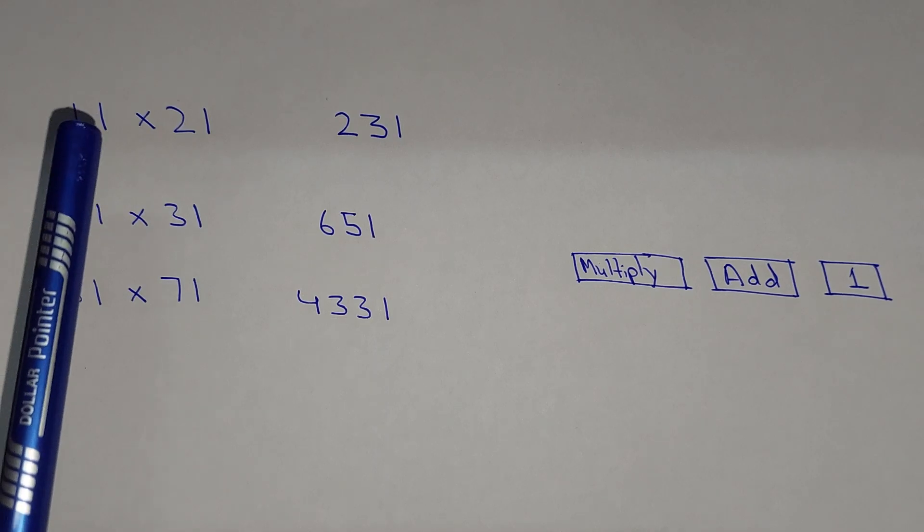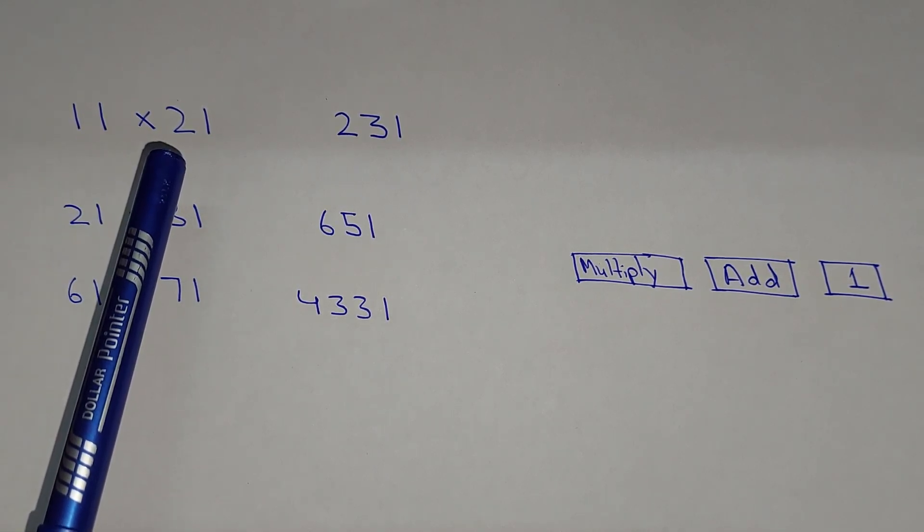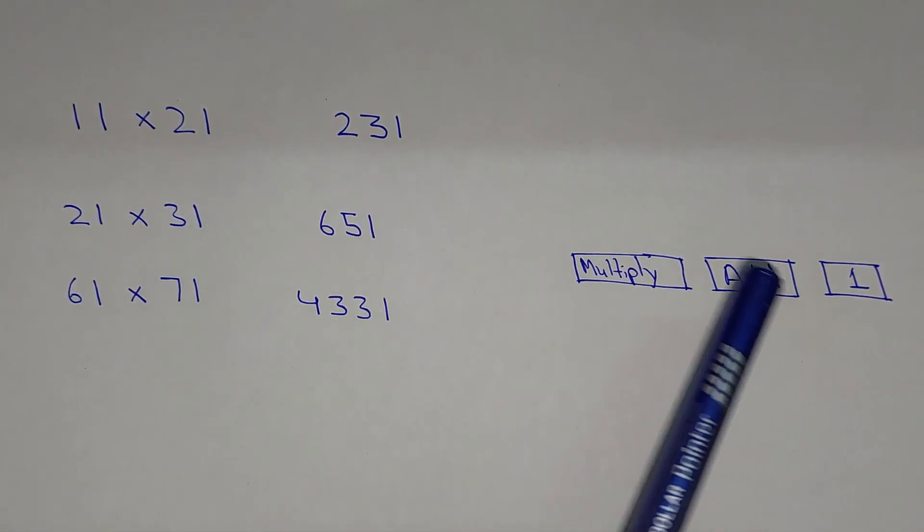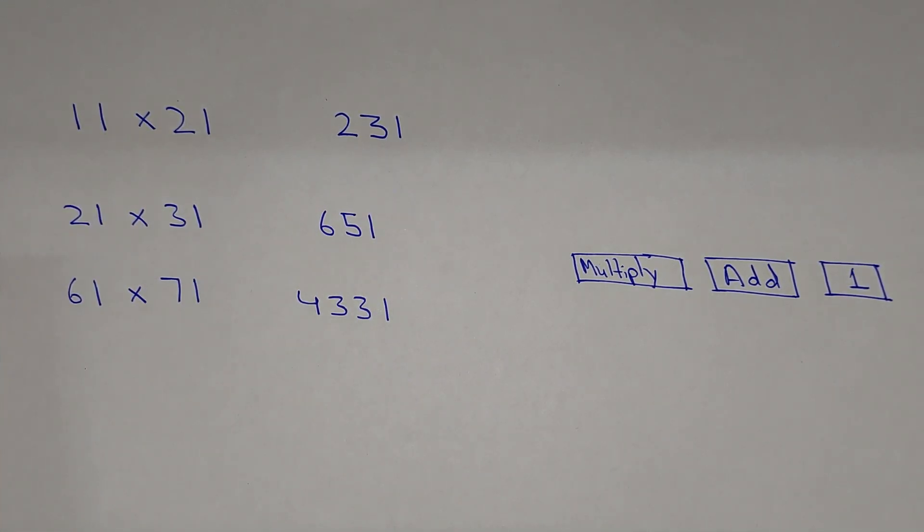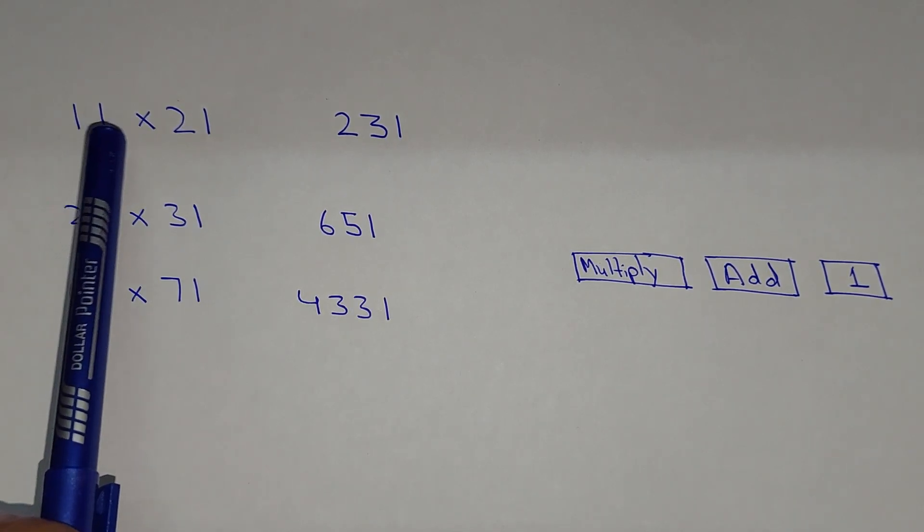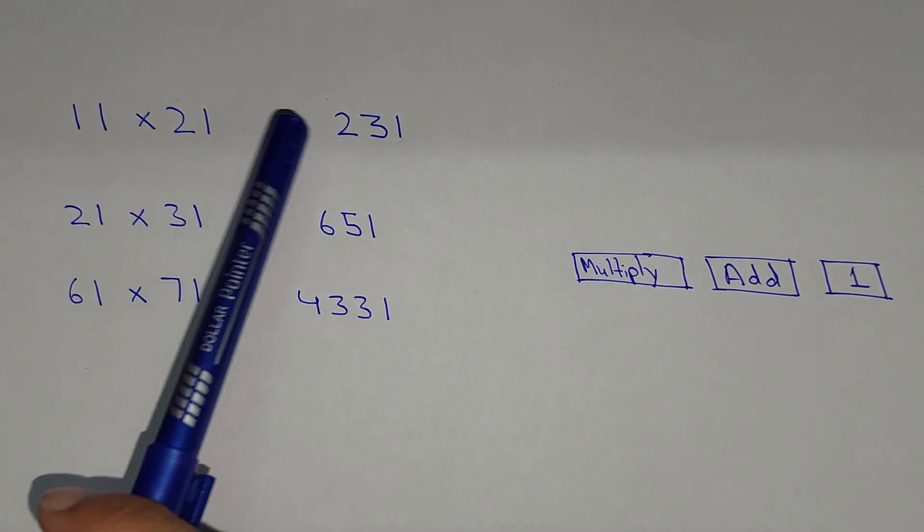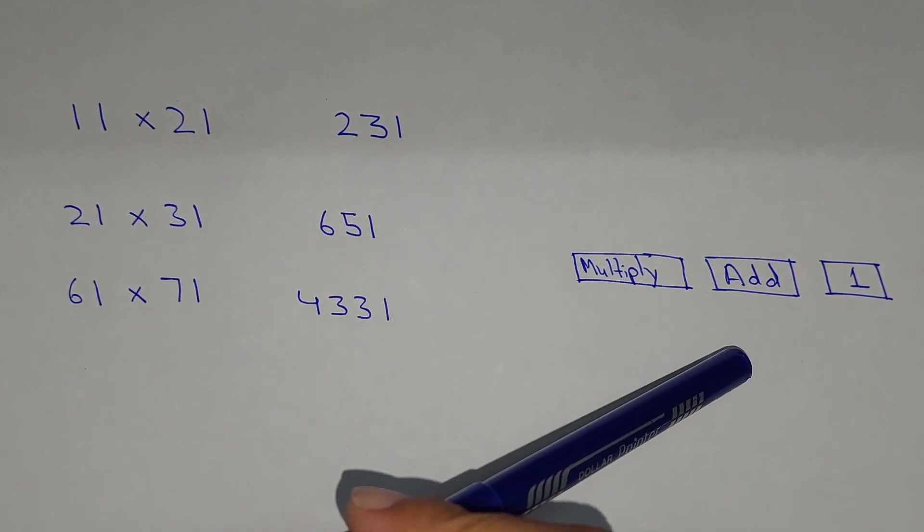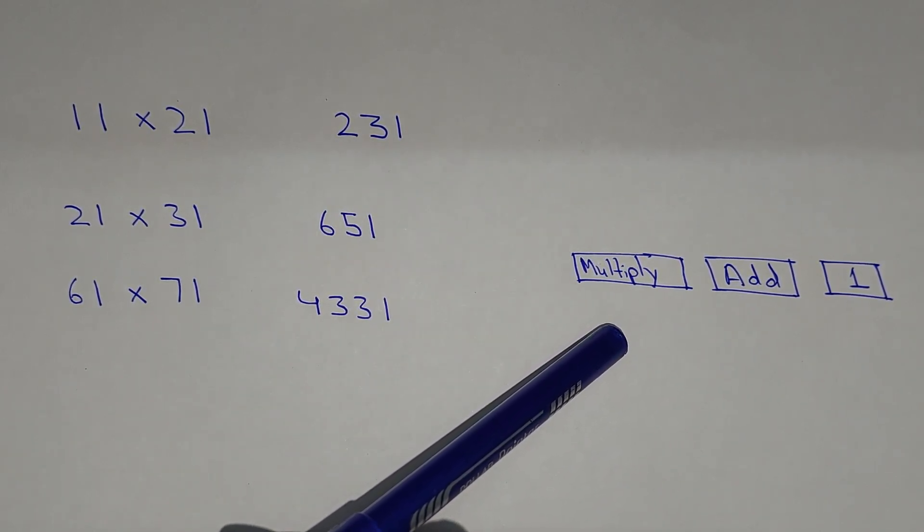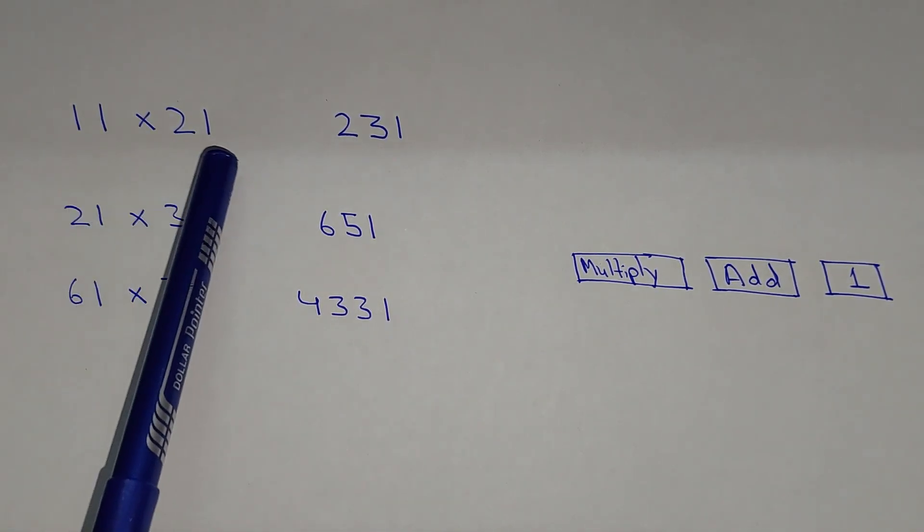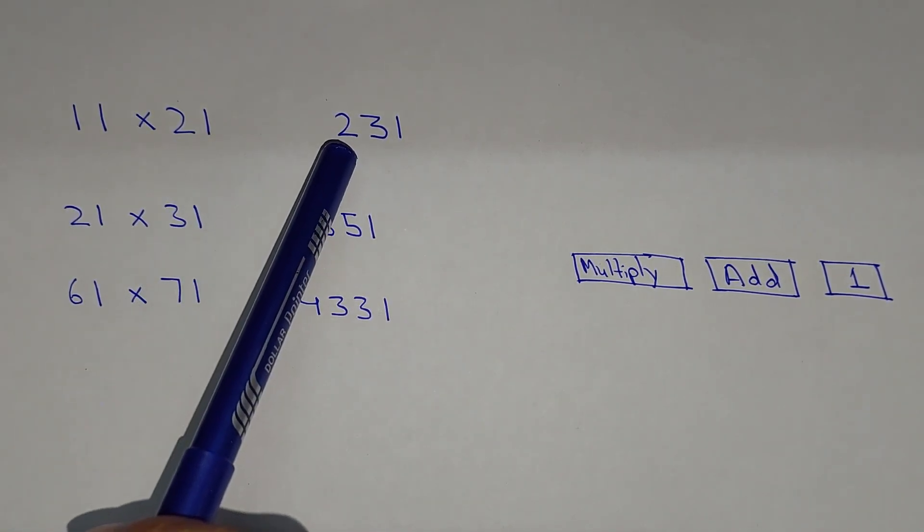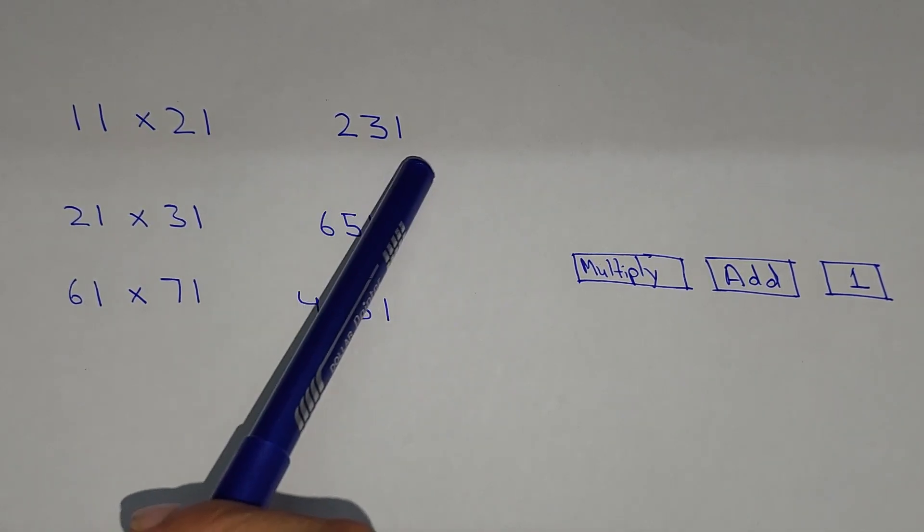So 11 multiply by 21. First of all we will write 1, and then we add the leading digits, so 1 plus 2, that will be 3, so we write 3 over here. And third step says we have to multiply the leading digits, so 1 multiply by 2, that will be 2. So 231 is the answer.